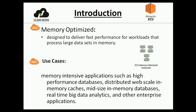Memory optimized is specifically designed to deliver fast performance for workloads that process large datasets in memory. The best examples are Redis cache or Memcached applications where you're storing large amounts of data in RAM. It offers the lowest cost per GB of RAM among memory optimized instances. Use cases include memory-intensive applications such as high-performance databases, distributed web-scale memory caches, mid-size in-memory databases, real-time big data analysis, and other enterprise applications.